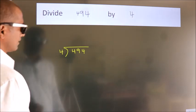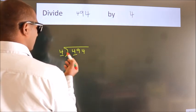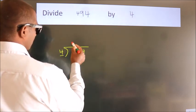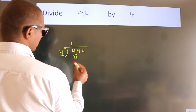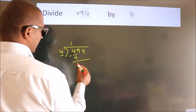Next, here we have 4. Here 4. When do we get 4? In the 4 table. 4 once is 4. Now we should subtract. We get 0.